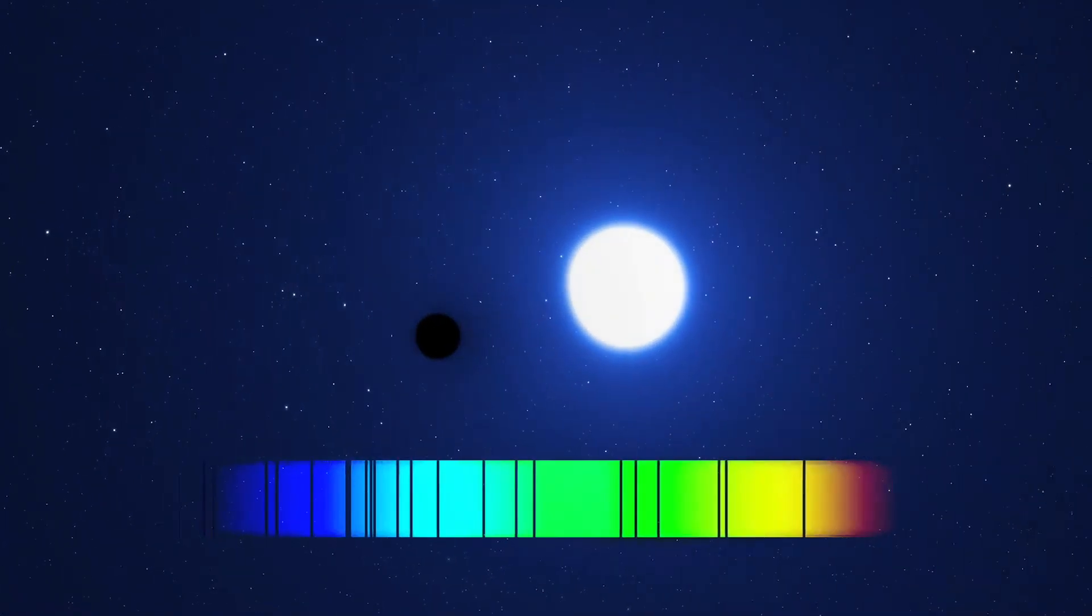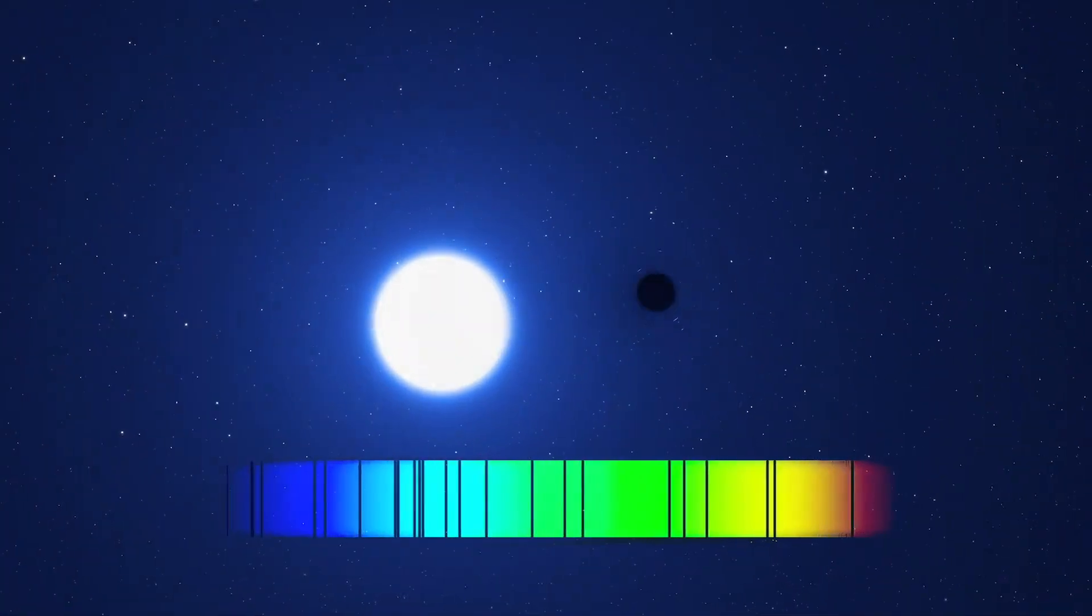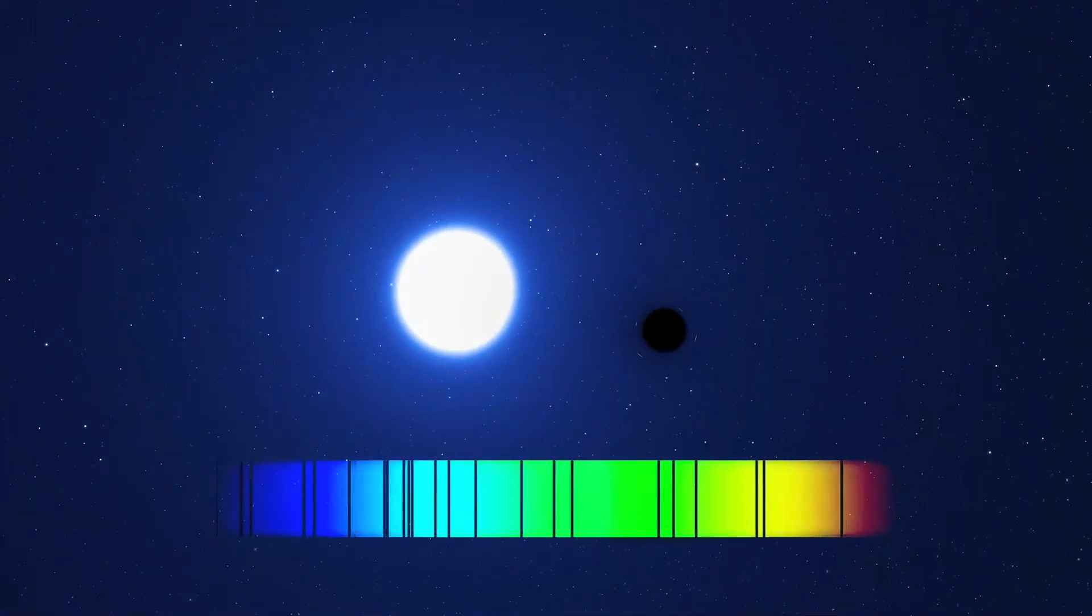While the black hole itself is invisible, the star's orbital motion and the significant red and blue shifts in its light confirm the presence of this massive partner.